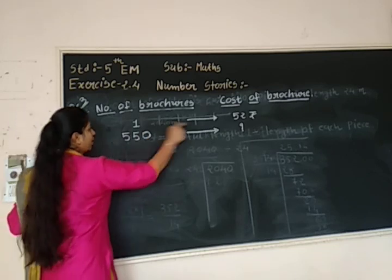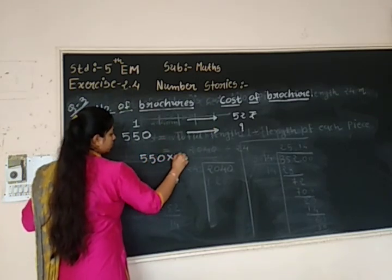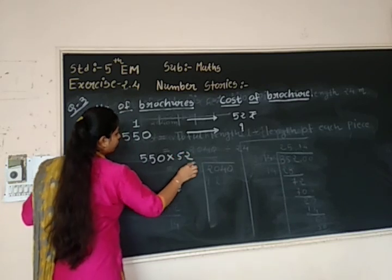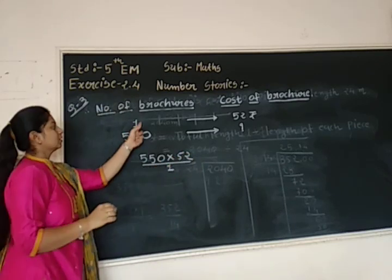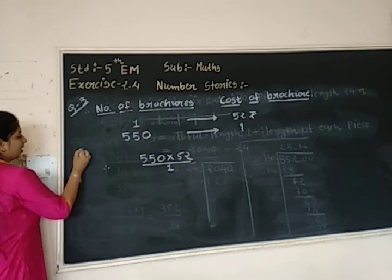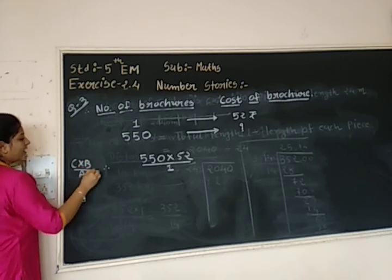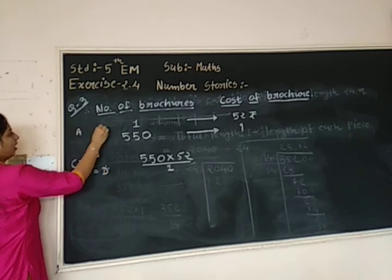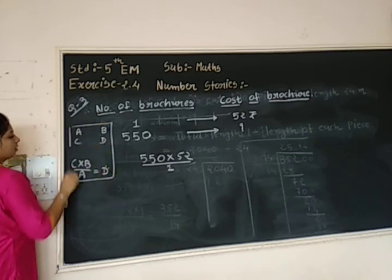Multiply this 550 by 52. And what will come in denominator? C, 1 will come because this quantity is A. A will come in denominator. It is like this C into B divided by A that is equal to B and A, B, C, B. Remember this. Whenever fourth quantity you want to find, you have to use this formula.